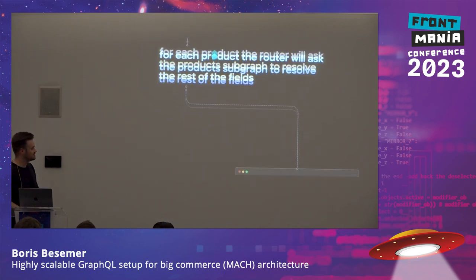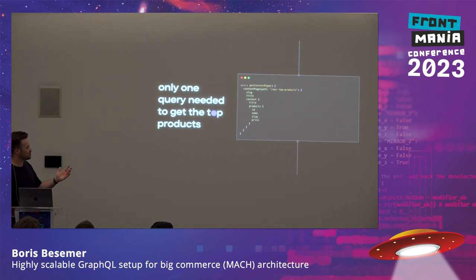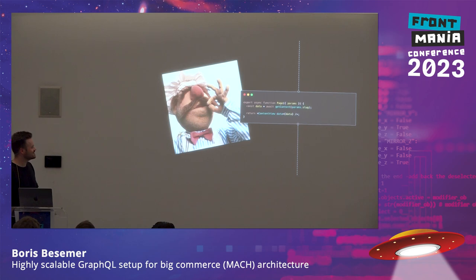Each product with just an ID gets the complete information. This means you get just one single query from the frontend. Because the supergraph has all product fields available, in the front end you can just ask for everything about a product — you don't need to first ask the content page and then do the product separately. It's all being done by federation, and you get a clean React component as the end result.